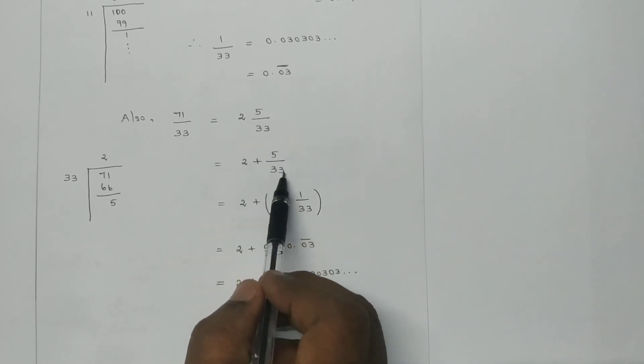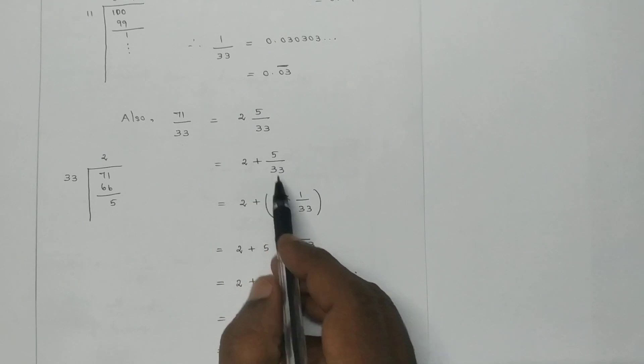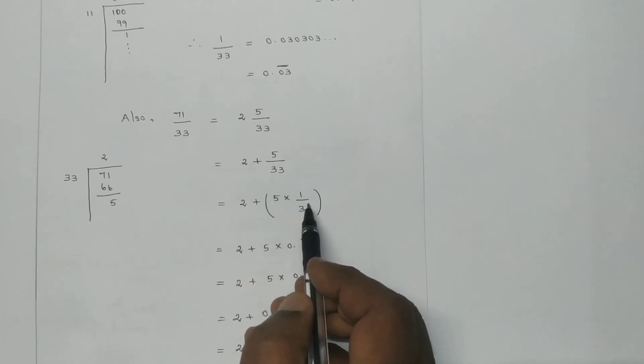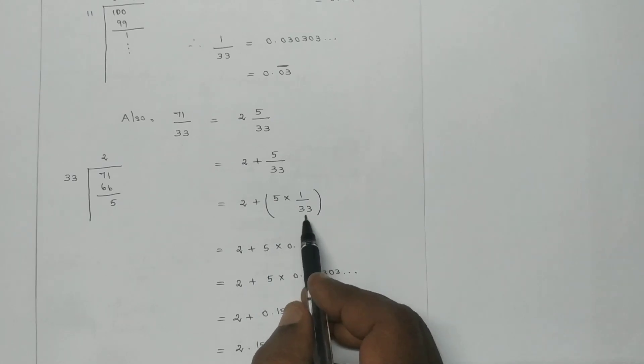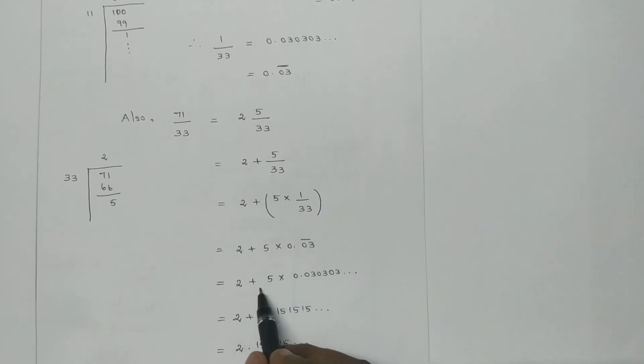Now 2 plus 5/33. This equals 2 plus 5 times 1/33. Now we are going to use 1/33 equals 0.03 bar. So this becomes 2 plus 5 times 0.03, 03, 03 repeating.